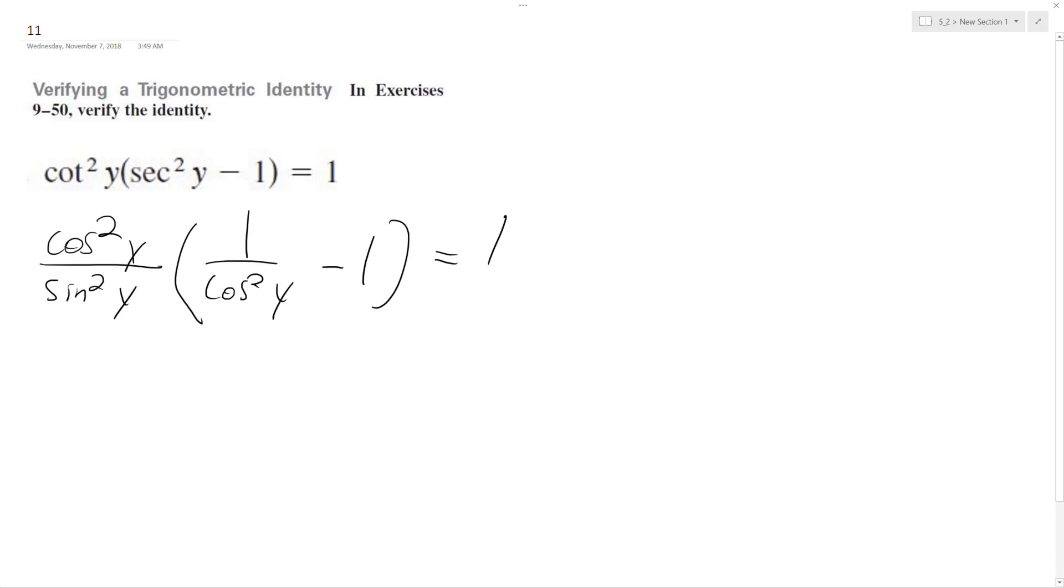So multiplying through the first, this cancels out, so we're left with 1 over sine squared y minus cosine squared y over sine squared y is equal to 1.